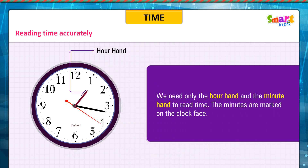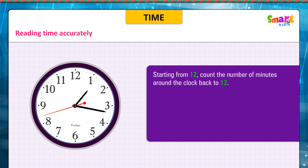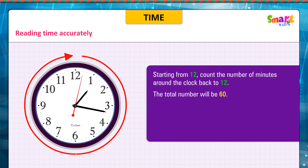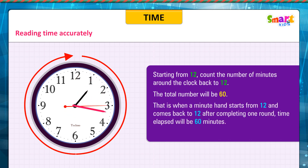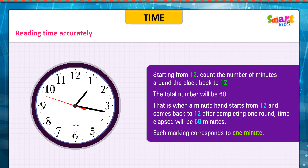We need only the hour hand and the minute hand to read time. The minutes are marked on the clock face. Starting from 12, count the number of minutes around the clock back to 12. The total number will be 60. That is when a minute hand starts from 12 and comes back to 12 after completing one round, time elapsed will be 60 minutes. Each marking corresponds to 1 minute.